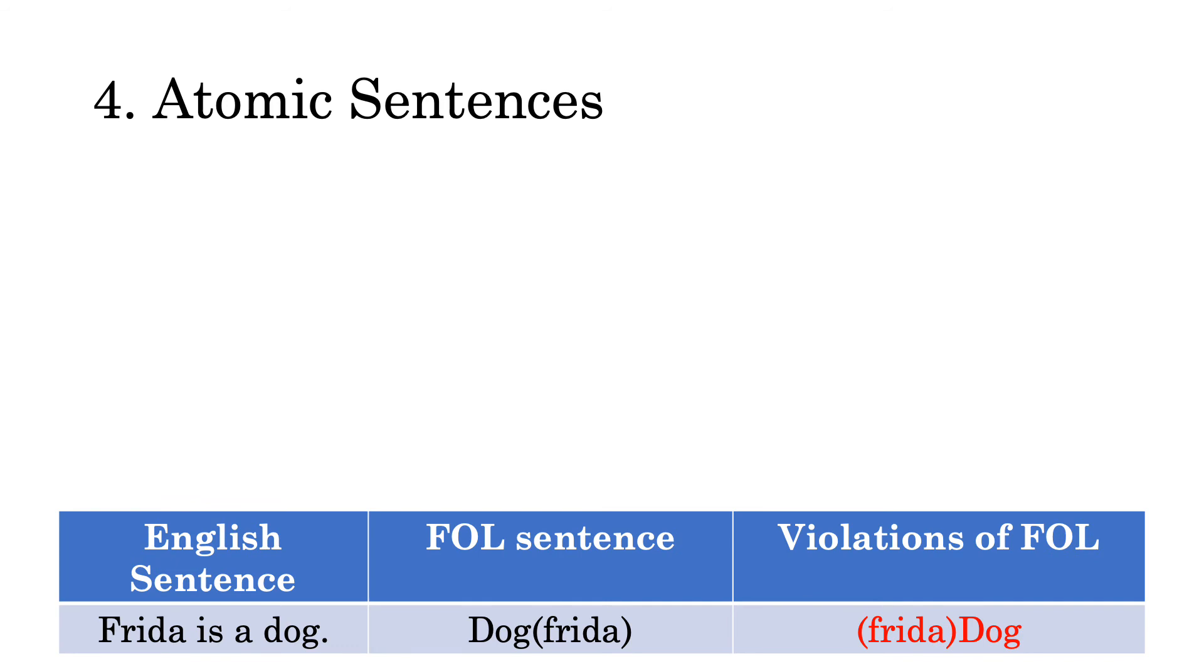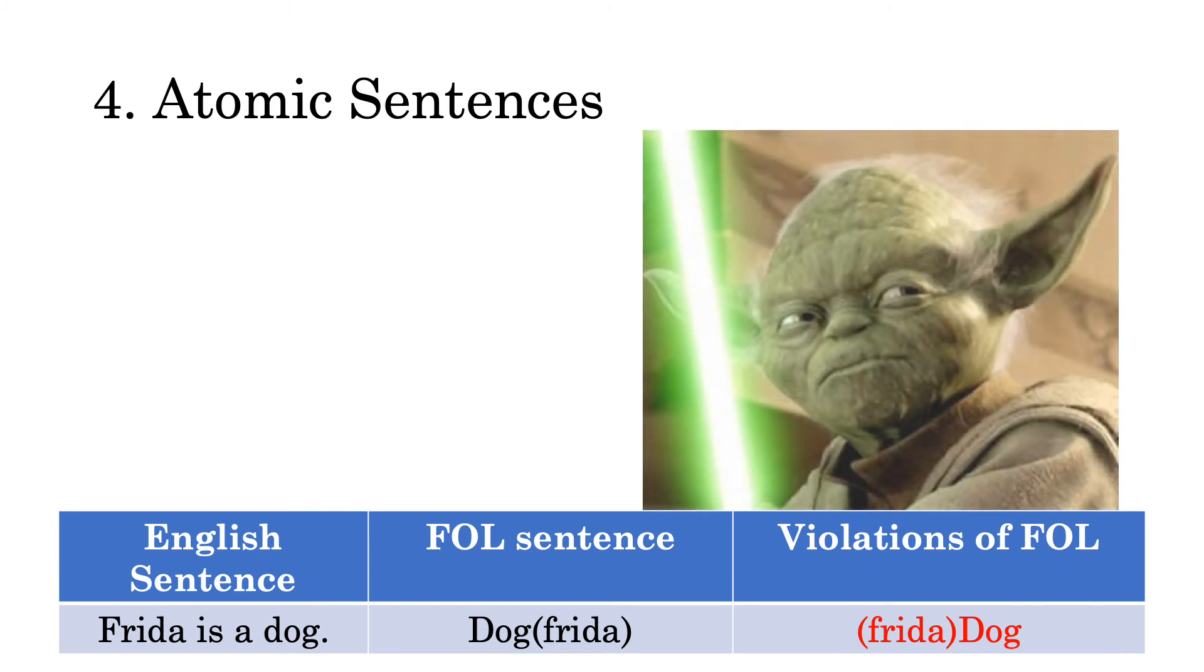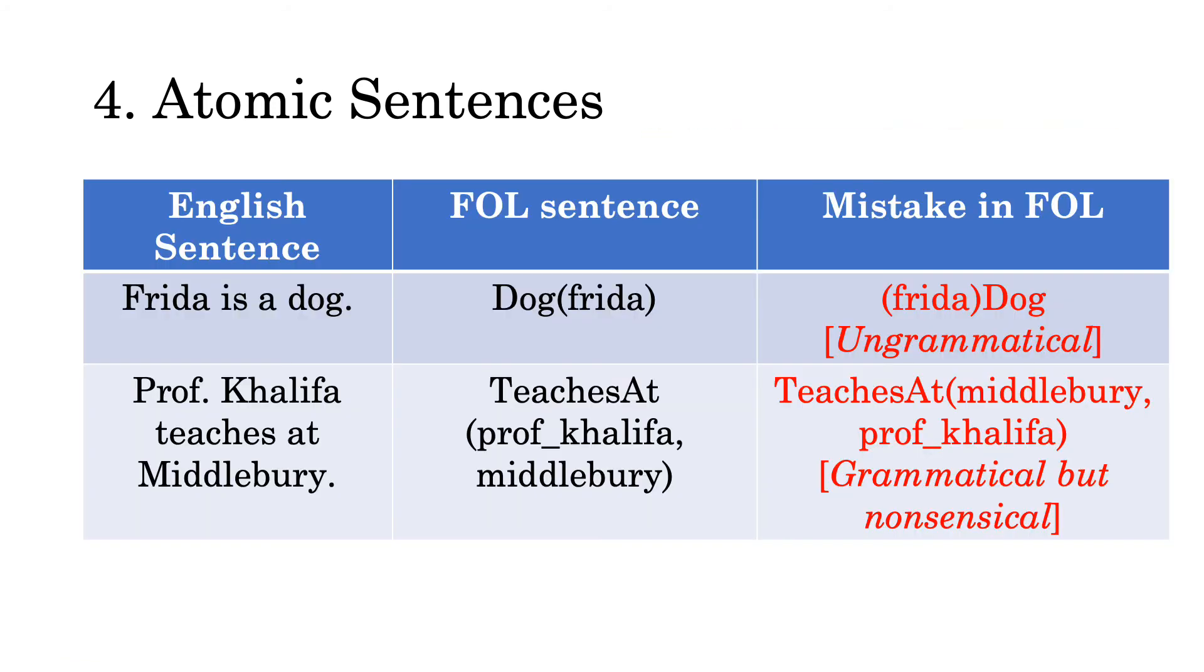So you might be tempted to write things as they are in the right-hand corner because that mimics the order in English. But that's ungrammatical. That would be like Yoda speak. That would be like, Dog Frida is. Note that the sentence open parentheses Frida dog is simply ungrammatical in first order logic. By contrast, our other example teaches at open parentheses Middlebury comma Prof Khalifa close parentheses is grammatical but nonsensical. What it says in English is Middlebury teaches at Professor Khalifa. I don't know what that means. Sounds painful.